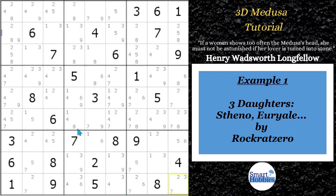This puzzle is by Rock Rat Zero, and it's actually named because of this strategy. The name of the puzzle is called Three Sisters — they're the Gorgon Sisters, and that famous sister is Medusa.